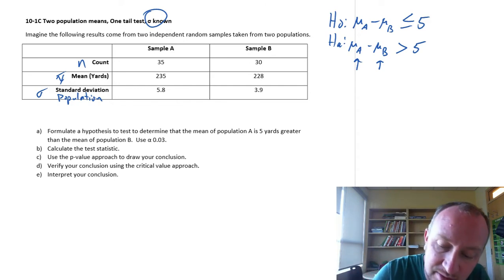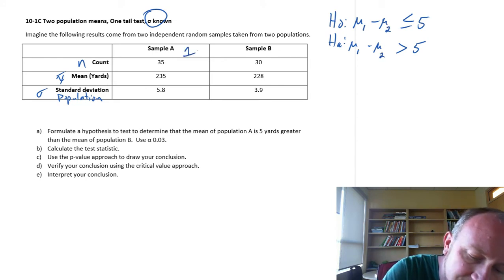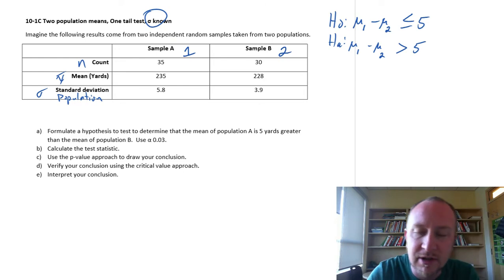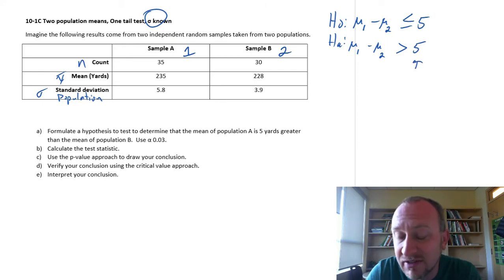So that's the only difference here. I could set this up as population one and two, if I wanted to do that as well, that would be perfectly fine. And then I would just have to say, well this is my population one, and this is my population two. So that's all there is there. Nothing too different, other than this being five and not a zero.